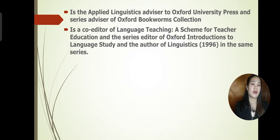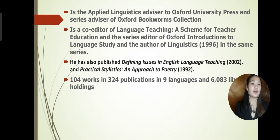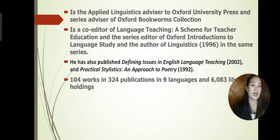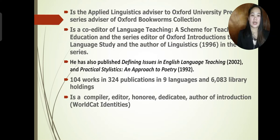He is also co-editor of Language Teaching: A Scheme for Teacher Education, and the series editor of Oxford Introductions to Language Study, and author of Linguistics in 1996 in the same series. He has also published Defining Issues in English Language Teaching in 2002, and Practical Stylistics: An Approach to Poetry in 1992. He has 104 works in 324 publications in nine languages and 6,083 library holdings.